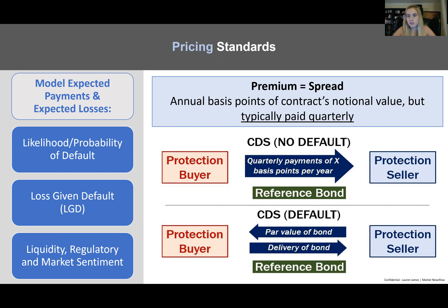CDS are quoted in terms of a premium, also called a spread — the annual number of basis points of the contract's notional value. Although quoted annually, premiums are typically paid quarterly, meaning four times per year. Diagrams show the protection buyer's and seller's roles; the key takeaway is that premiums are a percentage of notional value, paid quarterly but quoted annually.